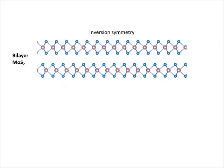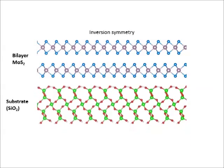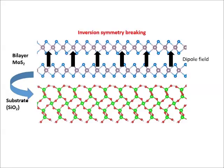Let's think of a freestanding bilayer MoS2. As mentioned, the inversion symmetry is there, and the valley polarization is absent. However, when MoS2 is on top of the substrate with oxygen dangling bonds, something different happens. Due to the interaction, electron charges are transferred from MoS2 to silicon oxide, and the dipole field induces the potential difference between the top and the bottom layers.